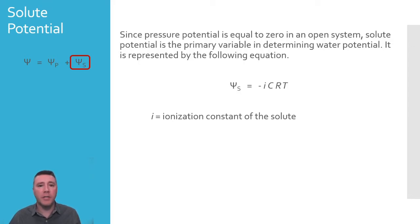Glucose, on the other hand, does not dissociate into any smaller particles and remains as a single molecule surrounded by a hydration shell of water. Glucose's ionization constant would therefore be one. The second variable, C, is the concentration in molarity, or moles per liter.